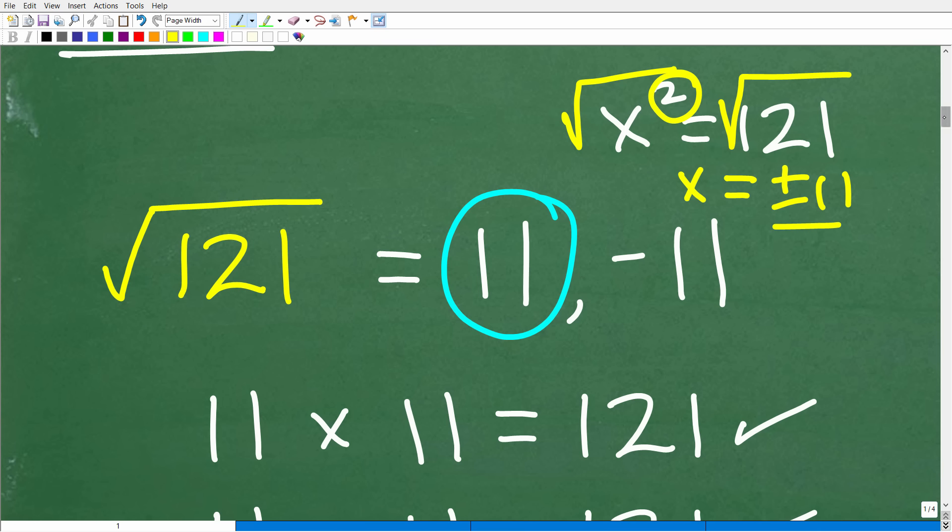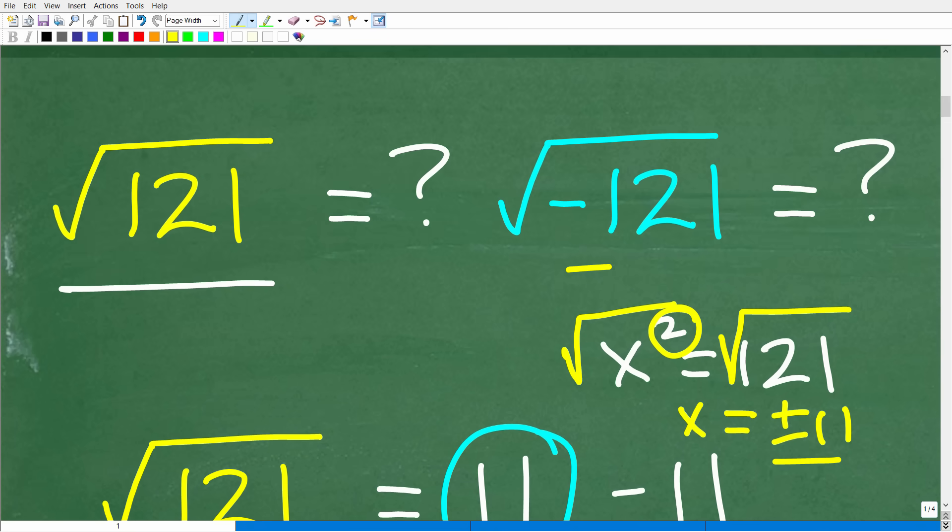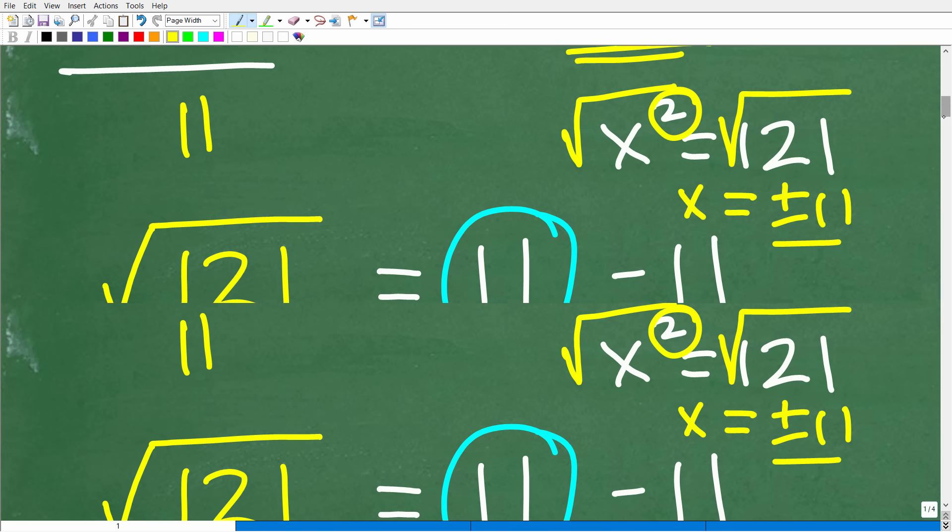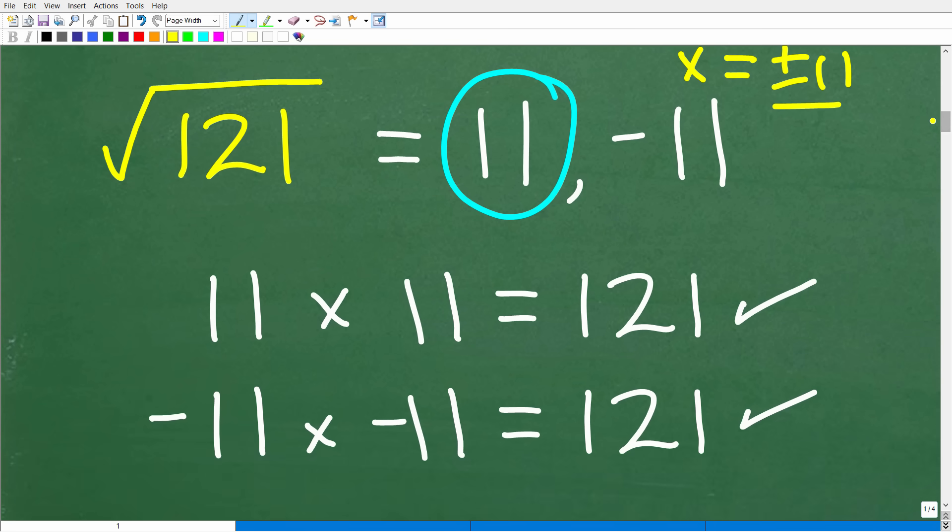All right. So, but here, clearly, if we say, well, you know, the square root of negative 121, I know the square root of 121 is 11. So maybe because this is negative, this is negative 11. Well, you can see here that that is not the case because negative 11 times negative 11 is 121. So what could the answer be, okay? If it's not positive 11 or negative 11, then what's going on? What do we need to do?